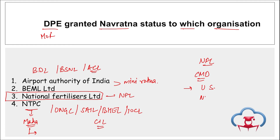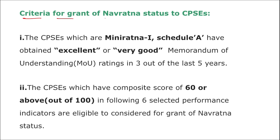NFL's Chairman and Managing Director is Saravanan. The headquarter is in Noida, UP, and it was established in August 1974. NFL has an authorized capital of ₹1,000 crore and paid-up capital of around ₹490.58 crore. The central government holds 74.71% share of the total paid-up capital, and financial institutions hold around 25.29%.